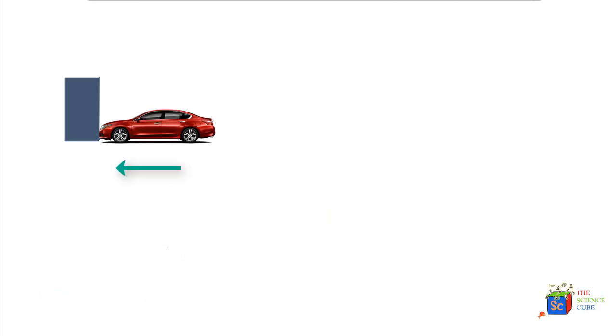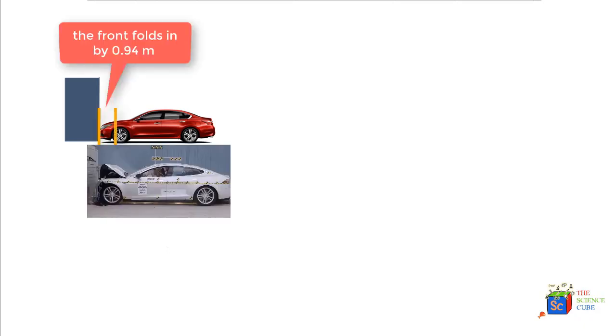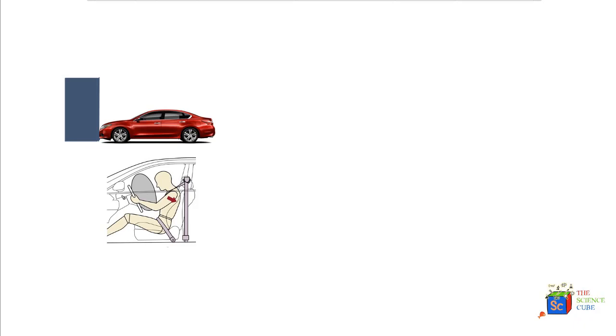We have a car moving at 70 kilometers per hour that crashes into a rigid wall and folds about 0.94 meters into it. There is a passenger of 75 kilograms sitting inside the car. The question is: what force should the seat belt offer to restrain the passenger? A good starting point is to understand what is happening to the passenger during the impact, as the car folds into the wall by 0.94 meters. Let's label all the details in the diagram neatly to solve the problem quickly.